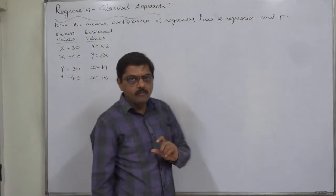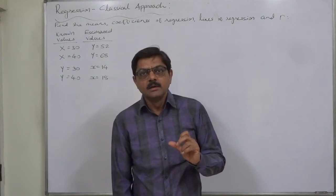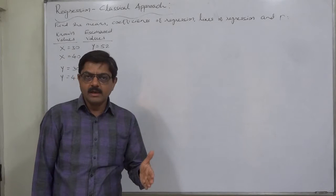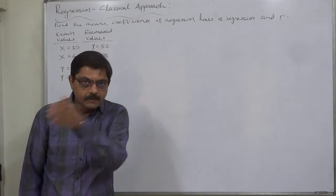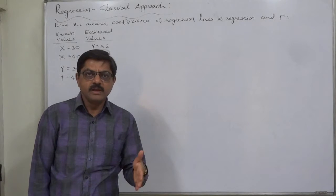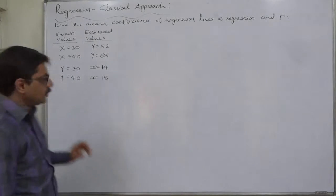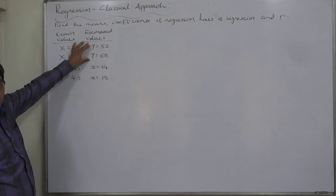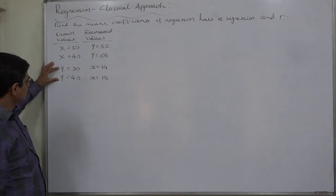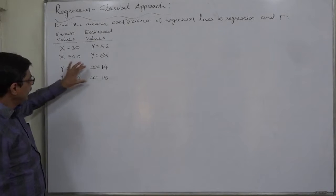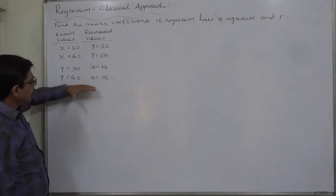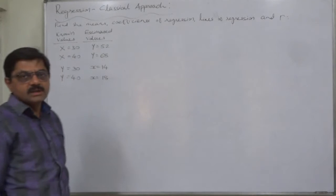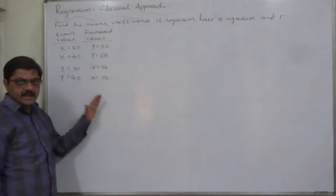When we have a known value of some variable and need to estimate the values of the other variable, the variable whose values are available is the independent variable, and the variable for which we need to estimate the values becomes the dependent variable. In the first two cases, x is independent and y is dependent, while in the second two cases, x is dependent and y is independent. In correlation and regression, we believe that y and x are both dependent and independent on each other at the same time.